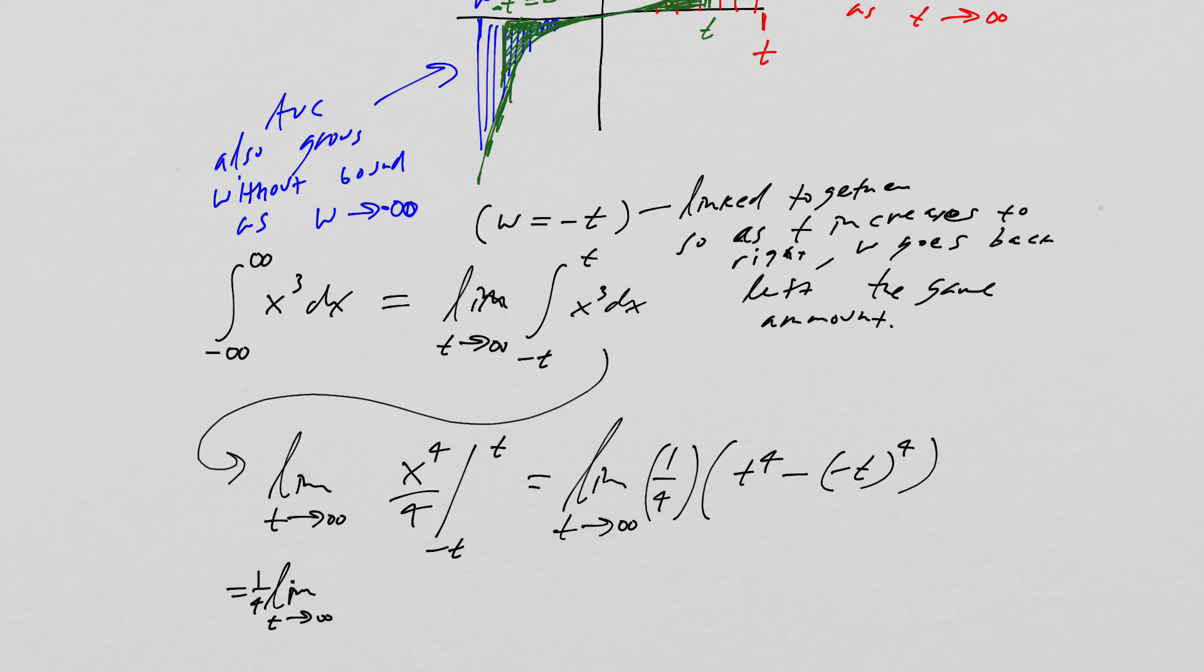I could bring the one fourth out front. And of course, we have t to the fourth minus t to the fourth, which is going to be one fourth of the limit t going to infinity of zero.